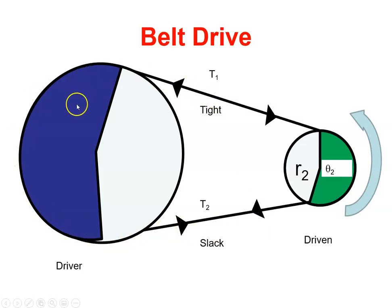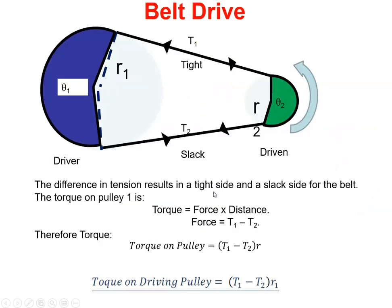So the difference in tension between this side of the belt and this side of the belt would be T1 minus T2. So we have this difference in tension.